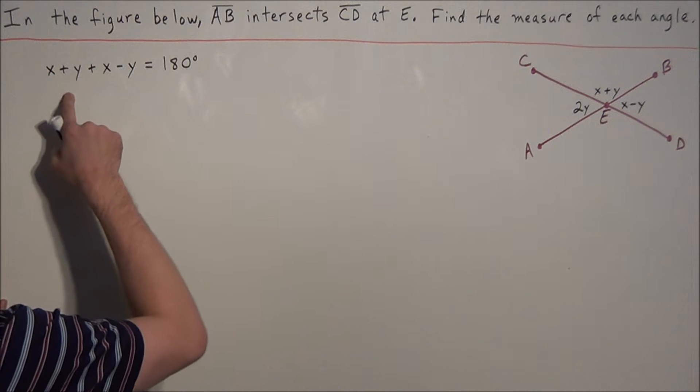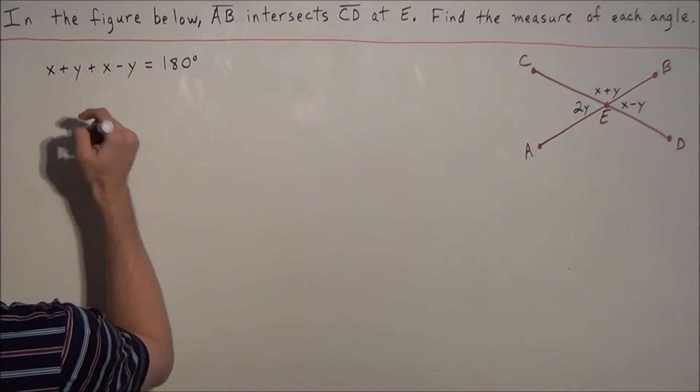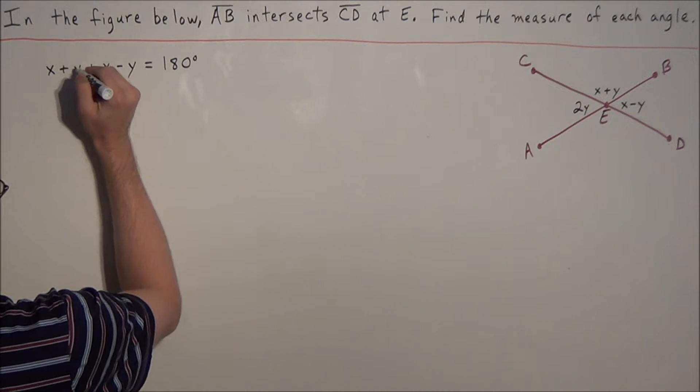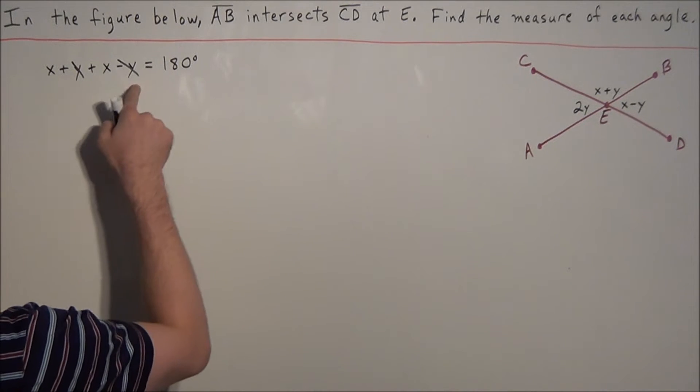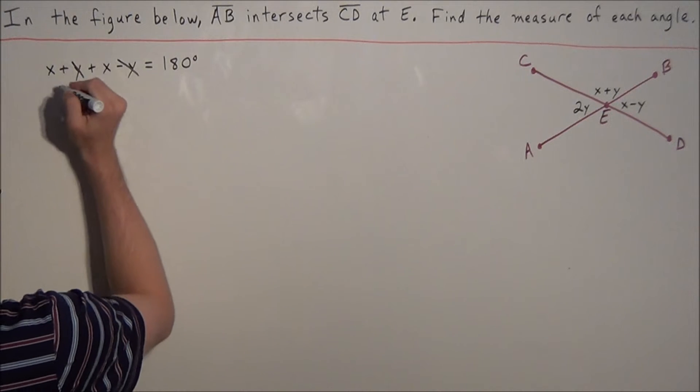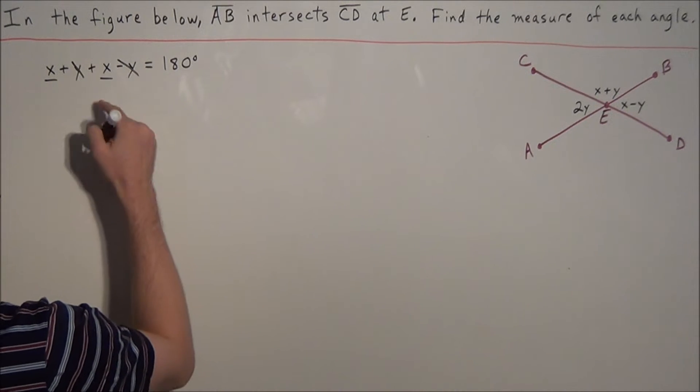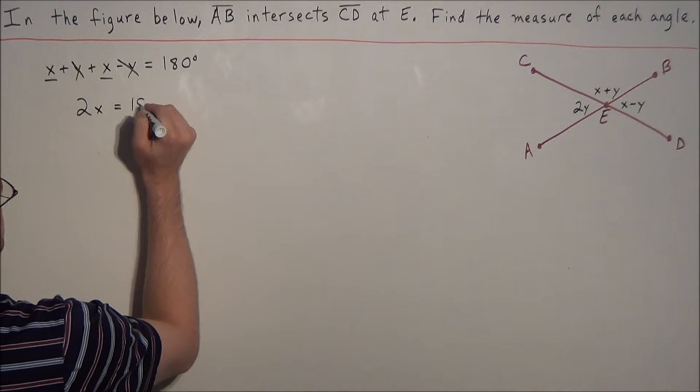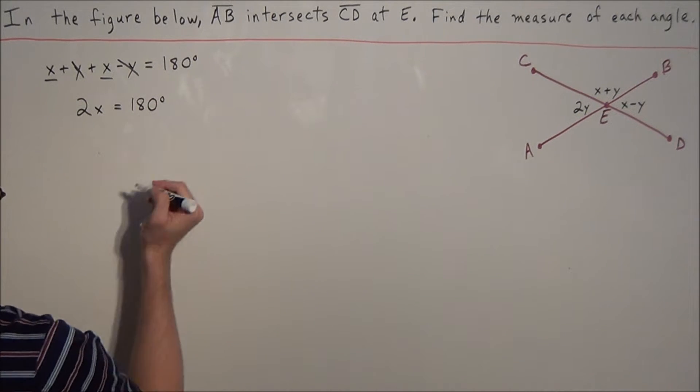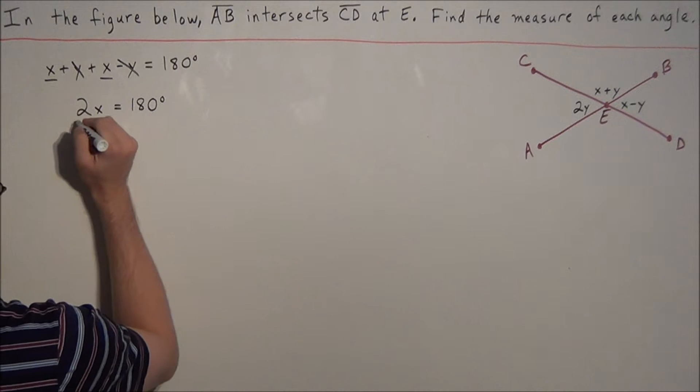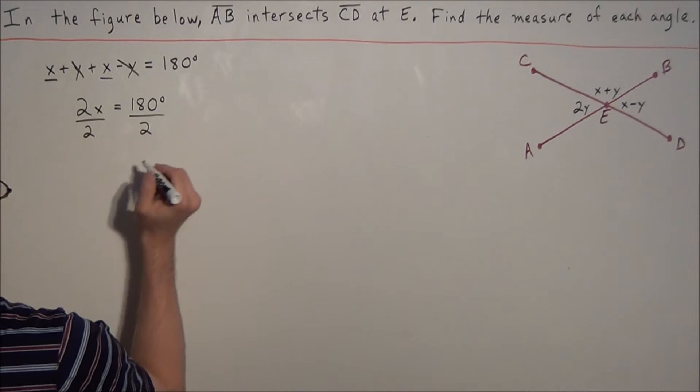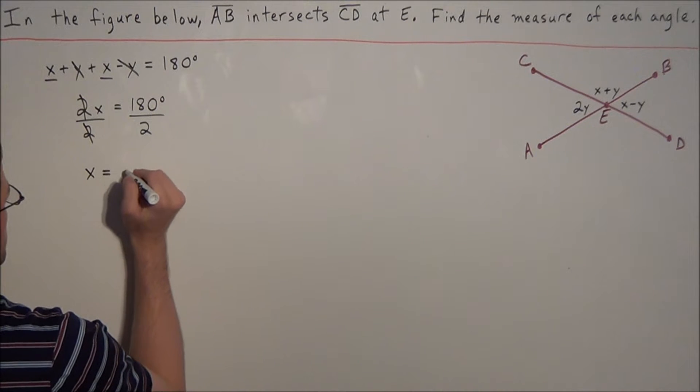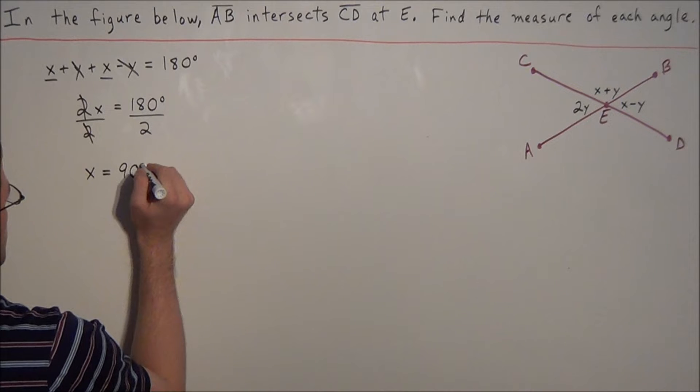Now notice how we have plus Y and minus Y when we combine like terms. We can cross off Y minus Y, those two variables will cancel. So we have X plus X is 2X, and this equals 180 degrees. To solve for X, we divide both sides by 2, and we have X equals 90 degrees.